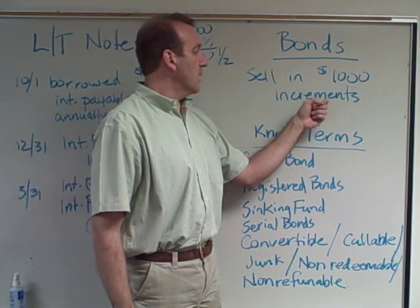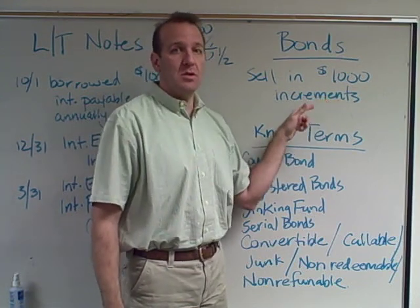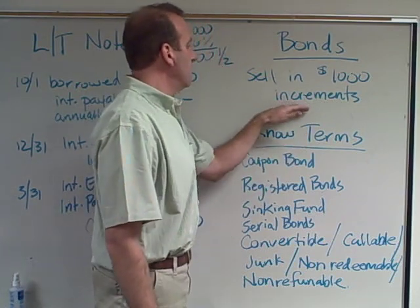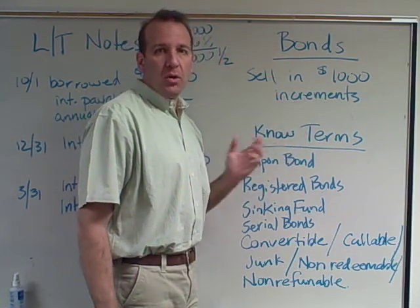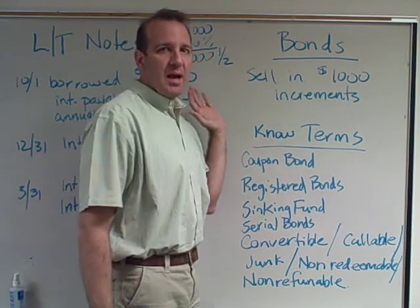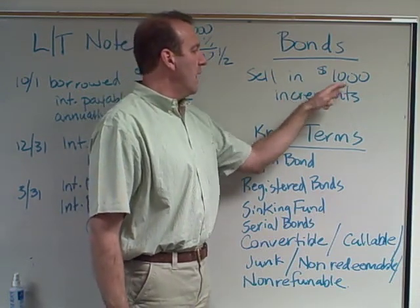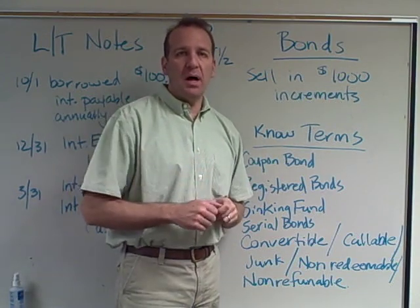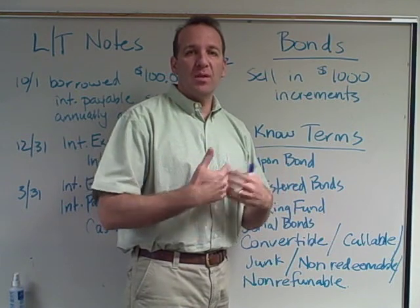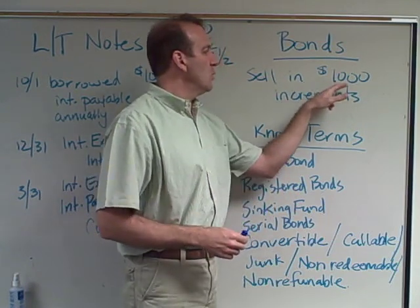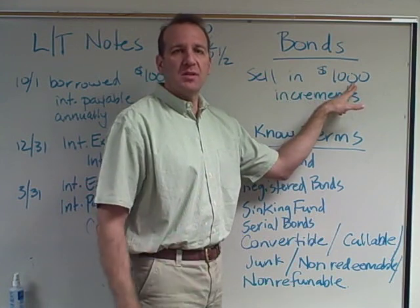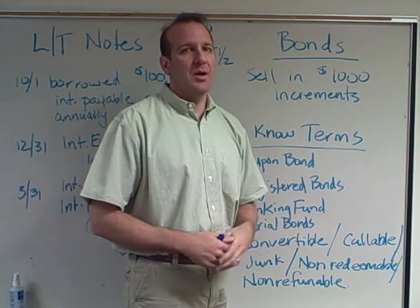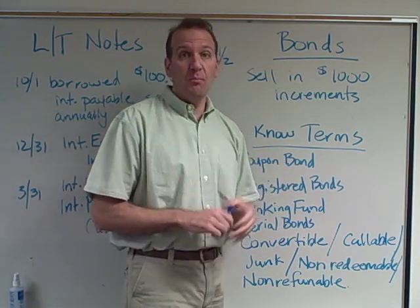The bonds have specific terms — the corporation agrees to pay interest at a certain rate and pay back the $1,000 in, say, ten years. There's a specific agreement called an indenture that explains the terms. If a business needed $100,000, instead of going to the bank, they could issue $100,000 worth of bonds. If people buy them, the corporation receives the money. Big corporations may sell thousands of bonds.